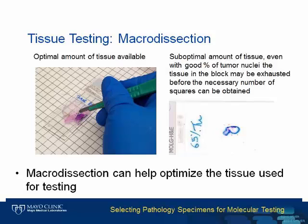The tissue used for testing is further refined by the process of macrodissection, including optimizing tumor percentage. With a large piece of tissue, such as pictured on the left, it is easy to overlay the unstained slide on top of the circled H&E, line up the unstained tissue, and scrape enough tissue from the selected areas, thus avoiding the surrounding non-tumor tissue. However, when you get smaller tissue specimens, like the picture on the right, it can be problematic to obtain the amount of tumor tissue needed, even though we can and do scrape multiple slides from the same block.